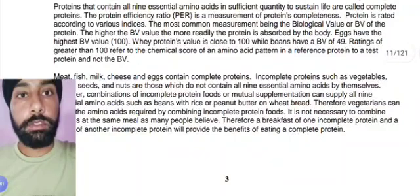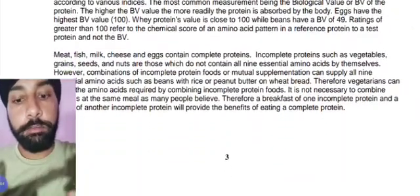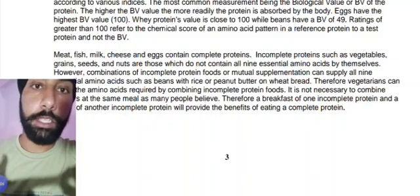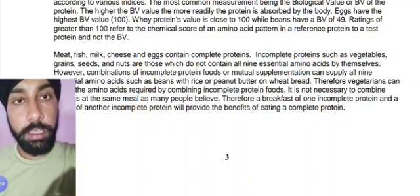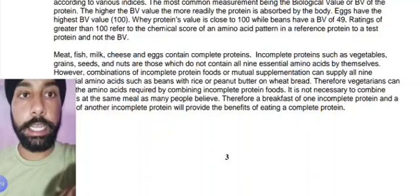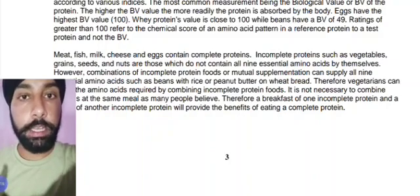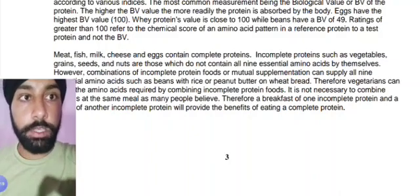Here you can see the sources of complete protein, which contain all the amino acids. They are meat, fish, milk, cheese, and eggs. These contain all the complete amino acids and are called complete proteins.